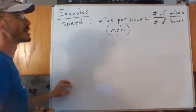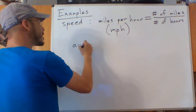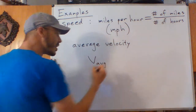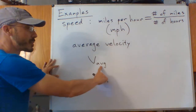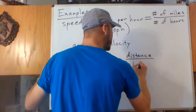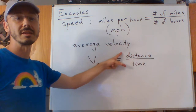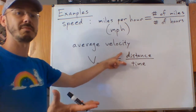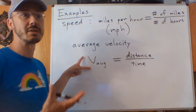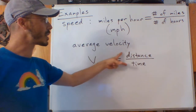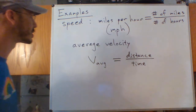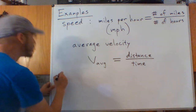Miles per hour is an example of average velocity, or V-avg — velocity, but specifically the average. It's distance divided by time. If I measure distance in feet and time in seconds, that gives feet per second, which is used for things like the speed of a bullet leaving a gun. It's just another way to measure velocity.